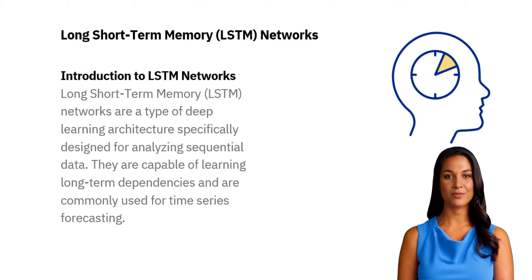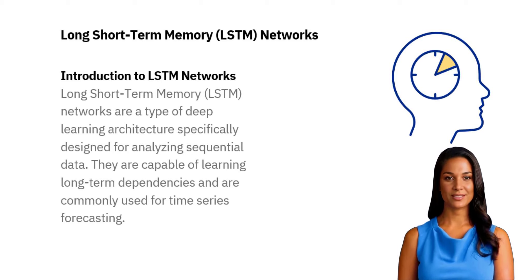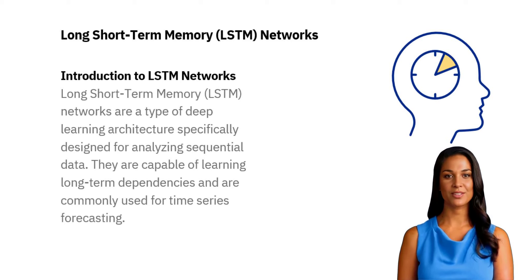LSTMs are one type of recurrent neural networks designed to model long-term dependencies in sequential and time series data. They are capable of storing and retrieving information over multiple time steps, which makes them suitable for modeling long-term dependencies. Memory cells, forget gates, input and output gates, a continuous cell state, and a hidden state are all used to help capture and predict long-term dependencies. Backpropagation through time is also used with LSTMs to better capture and forecast long-term dependencies.